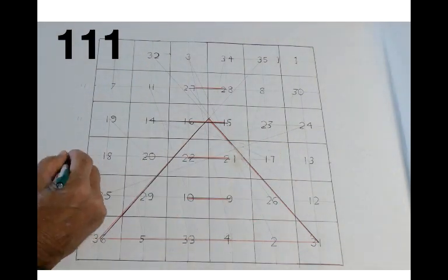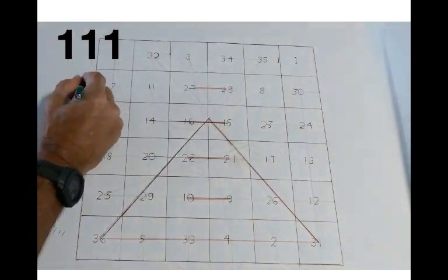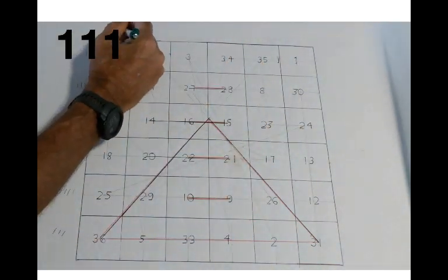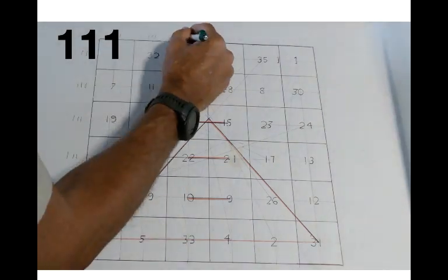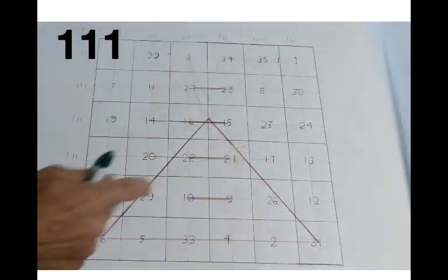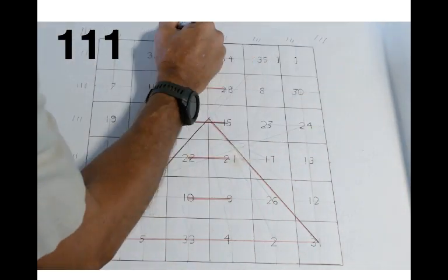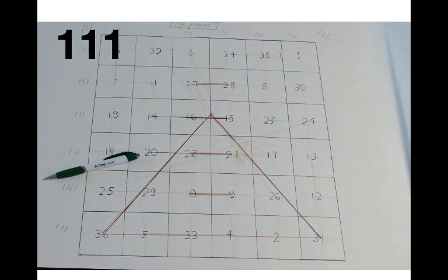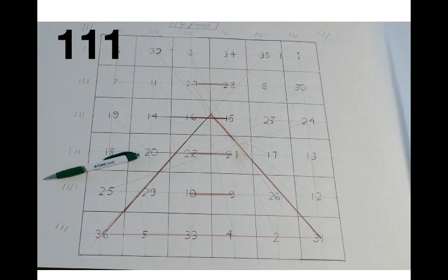Okay, well, take this Enochian Square and you add up all the numbers across the rows and they all equal 111. But not only that, you add up the columns and all of them equal 111. Not only that, but the diagonals. So 14 places where you've got the number 111 in this Enochian Square, which is ancient. You know, I don't know where it originated. Some people say with Enoch. So there's 14 pieces. That is 14 111s.